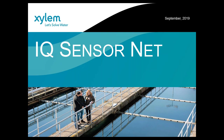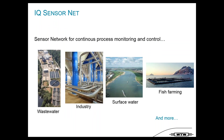Let's start with a brief overview of IcoSensorNet. IcoSensorNet is a sensor network for continuous process monitoring and control. We have a big range of applications — it can be used in wastewater, industrial applications, surface water, fish farming, and more.